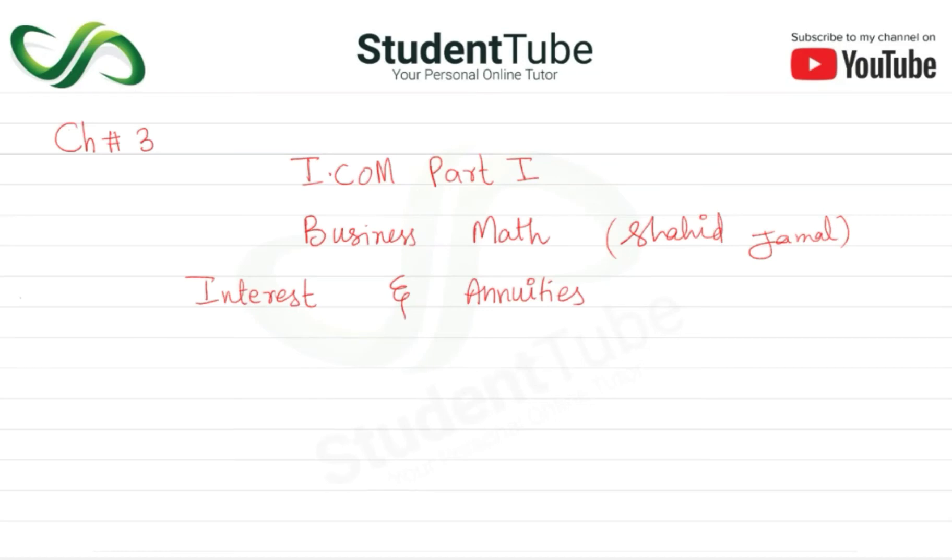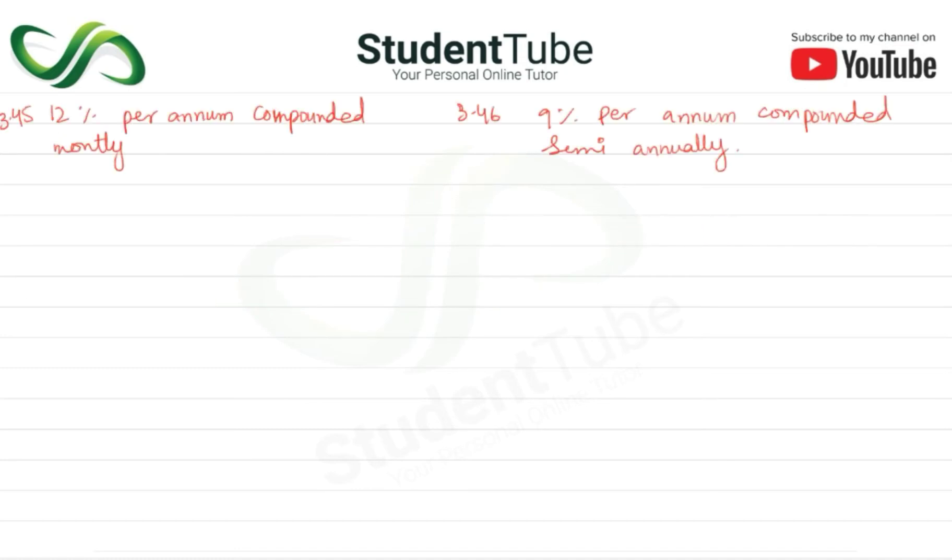Assalamualaikum, welcome to StudentTube. In this lecture, Chapter 3, I.Com Part 1 Business Math book Shahid Jamal, Chapter Interest and Annuities. Question 3.45: 12 percent per annum compounded monthly. Compounded monthly, so here we will